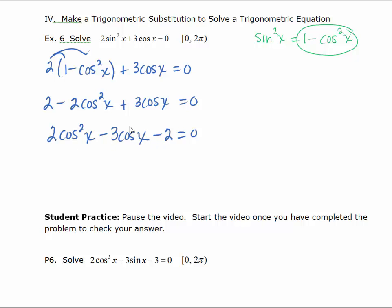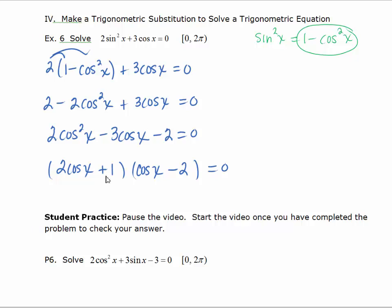Now we can factor this. You can use u-substitution if it helps. After factoring, we get 2 cosine x plus 1 times cosine x minus 2.